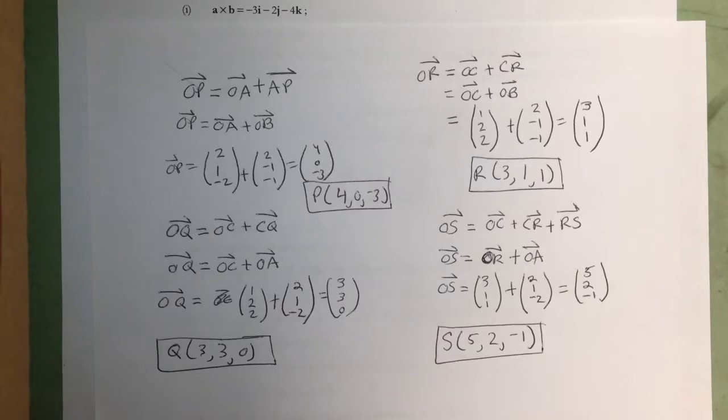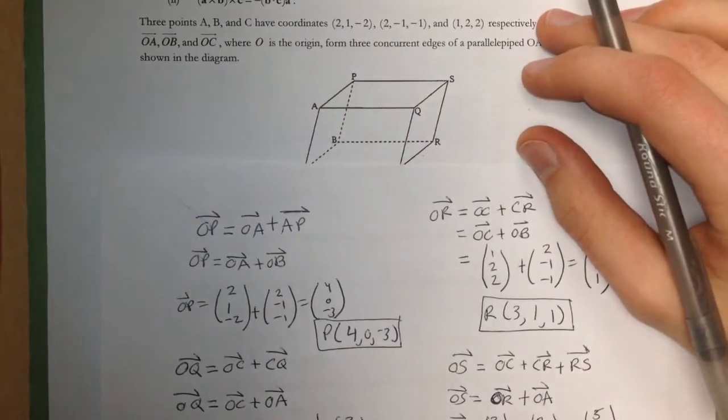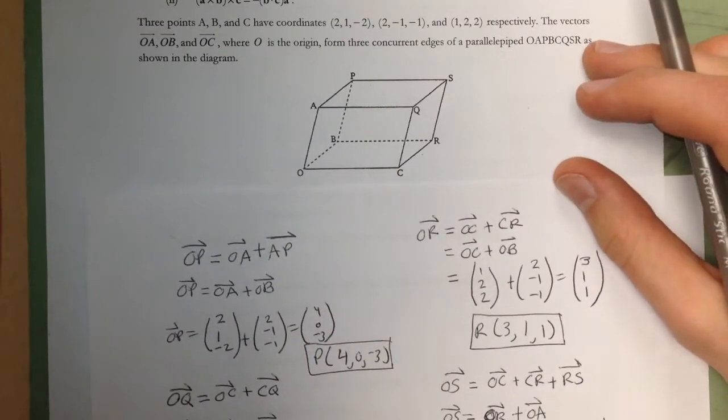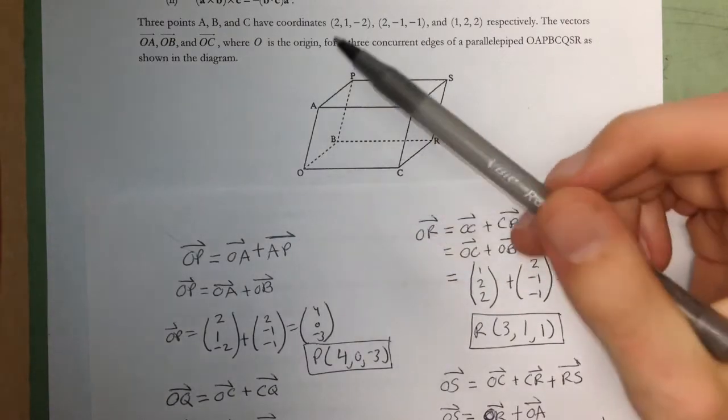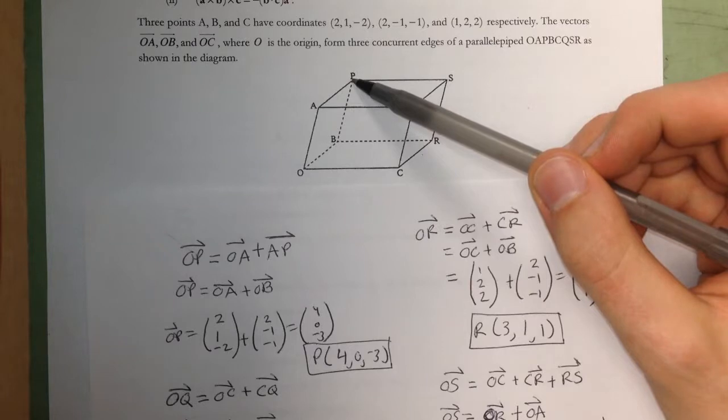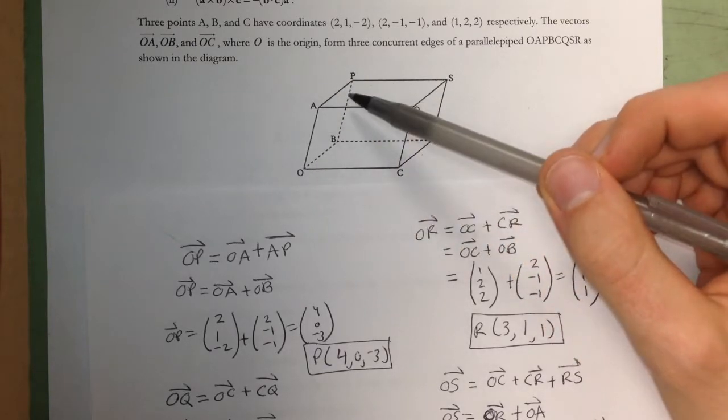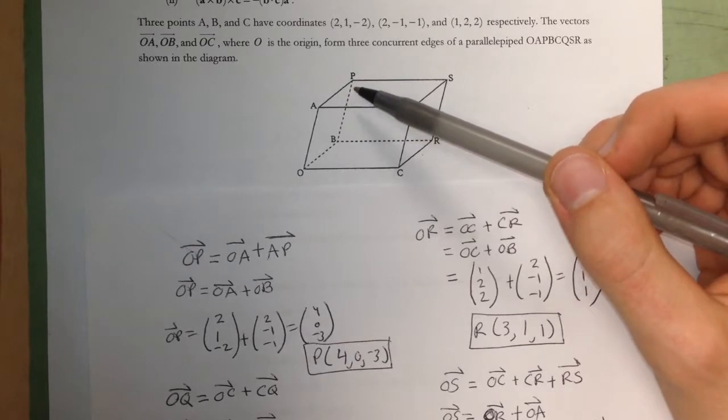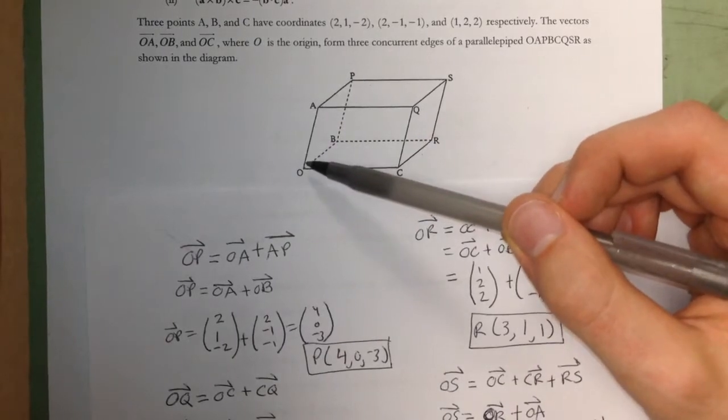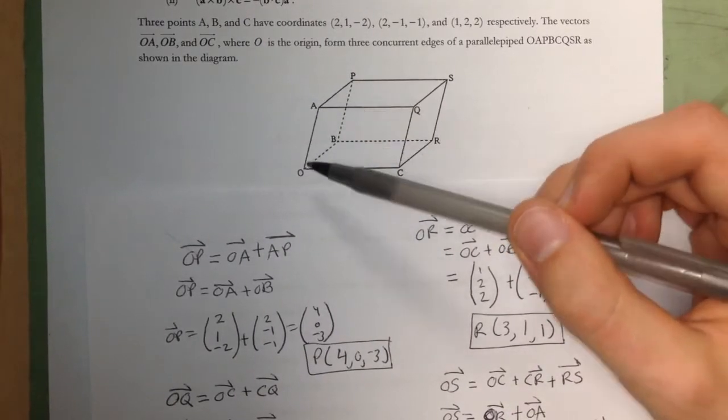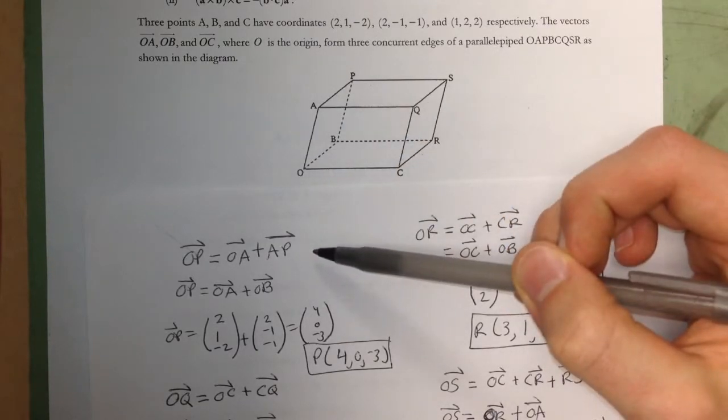So first of all, to find point P, what you want to do is point P will be given by the vector from the origin to point P, because that will basically give you the coordinates of point P but just in vector form. Because we can add vectors geometrically, we can go to P through A. So we know OP is going to be OA plus AP.